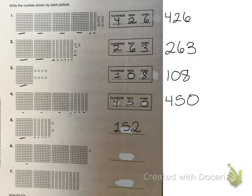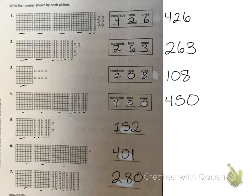The next one I have one, two, three, four hundreds. I have no tens, so I'm going to put a zero, and I have one ones. On the last one I have two hundreds and one, two, three, four, five, six, seven, eight tens, and no ones. So my answer is 280.